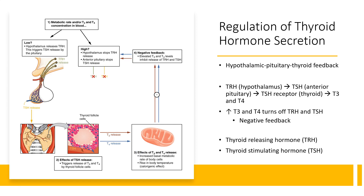Thyroid hormone secretion is regulated through a hypothalamic-pituitary-thyroid negative feedback system. When levels of thyroid hormone are too low, this signals the release of thyroid-releasing hormone from the hypothalamus. Thyroid-releasing hormone then travels to the anterior pituitary, signaling the release of thyroid-stimulating hormone. Thyroid-stimulating hormone then travels to the thyroid, where it signals the thyroid follicle cells to release T3 and T4. When blood levels reach their physiologic need, this signals through negative feedback an inhibition of thyroid-releasing hormone and thyroid-stimulating hormone production, turning off this system.